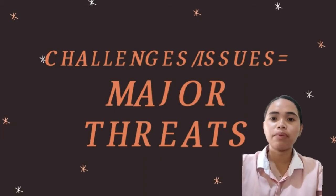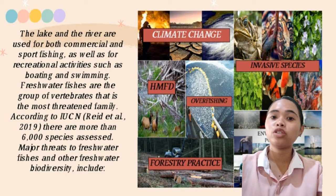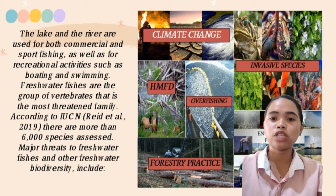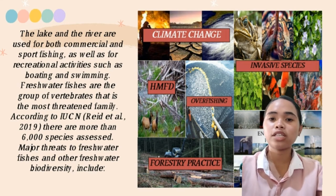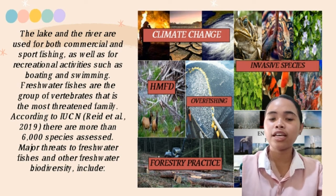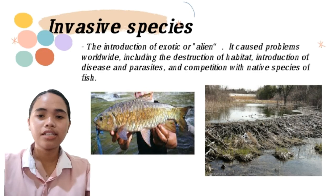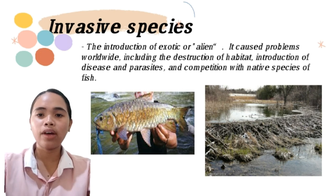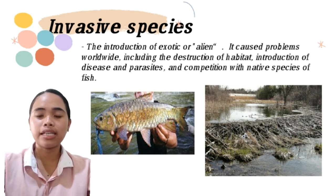The challenges and threats to lake and river fisheries: lakes and rivers are used for both commercial and sport fishing, as well as recreational activities such as boating and swimming. Freshwater fishes are the most threatened group of vertebrates. According to the IUCN in 2019, there are more than 6,000 threatened species. A major threat is invasive species — the introduction of exotic or alien species has caused problems worldwide, including destruction of habitat, introduction of disease and parasites, and competition with native fish species.